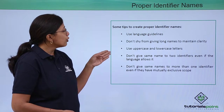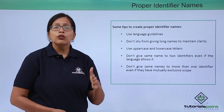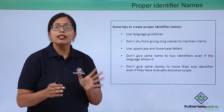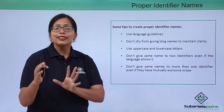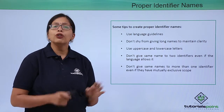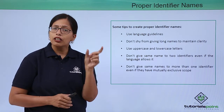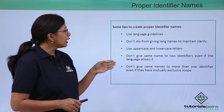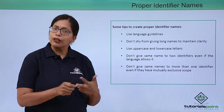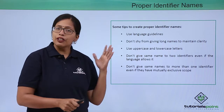You should never shy away from giving long names. Don't feel hesitant — giving long names makes variables self-explanatory. Use a combination of lowercase and uppercase letters, which makes the variable name very clear. Also, don't give the same name to two identifiers, even if your language allows it or they have different scopes.